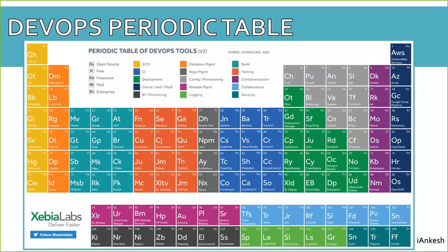So this is the DevOps periodic table. If you see, we have verticals like SCM, which is source code management, and for SCM we have tools like GitHub, GitLab, and Bitbucket. For CI, that is continuous integration, we have tools like Jenkins, Bamboo, and TeamCity. The same way, for build we have tools like Maven, Gradle, and others.